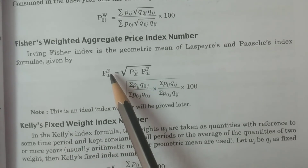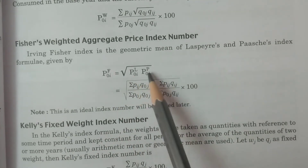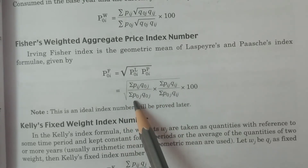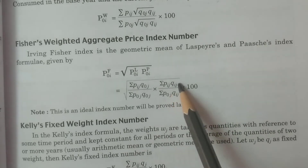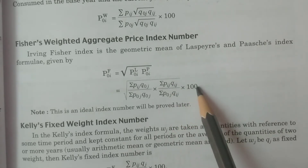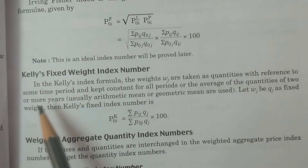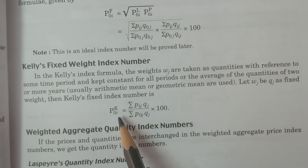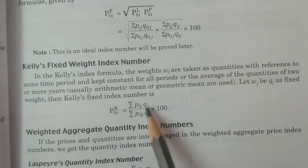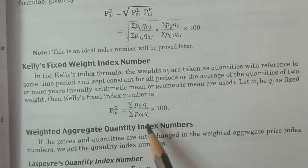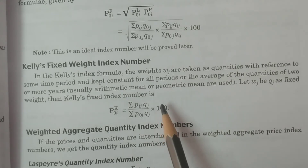Fisher's ideal index number P0I(F) is the geometric mean of Laspeyres and Paasche: square root of [summation PIJ·Q0J / summation P0J·Q0J] × [summation PIJ·QIJ / summation P0J·QIJ] into 100. Kelly's fixed weight index number P0I(K) = summation PIJ·QJ divided by summation P0J·QJ into 100, where QJ can be a fixed average quantity.